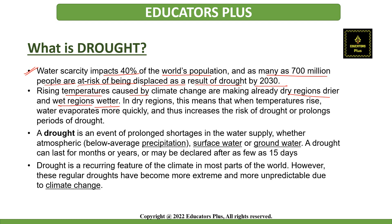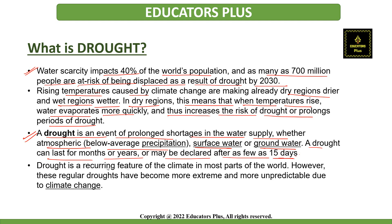Rising temperatures caused by climate change are making already dry regions drier and wet regions wetter. When temperature rises, water evaporates more quickly, which increases the risk of drought or prolonged periods of drought. Drought is an event of prolonged shortage in the water supply — this shortage can be atmospheric, at surface level, or at ground level. A drought can last for months or years and may be declared after as few as 15 days. Drought is a recurring feature of the climate in many parts of the world, and regular droughts have become more extreme and unpredictable due to climate change.